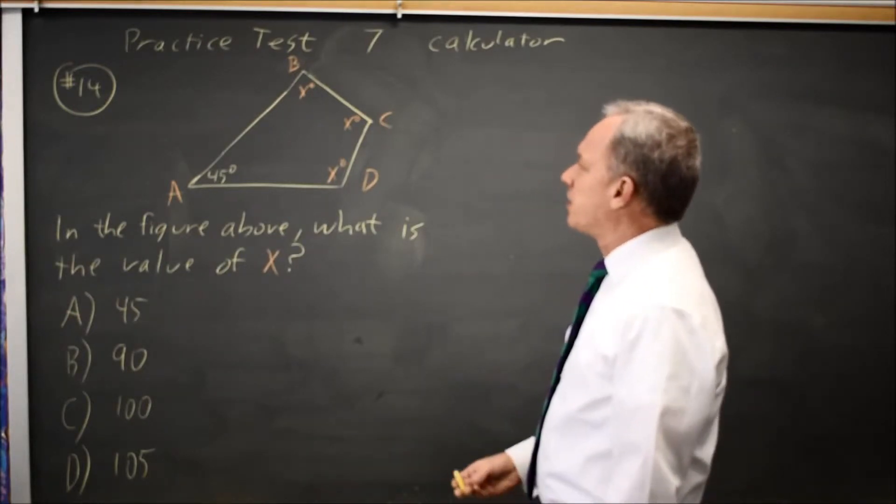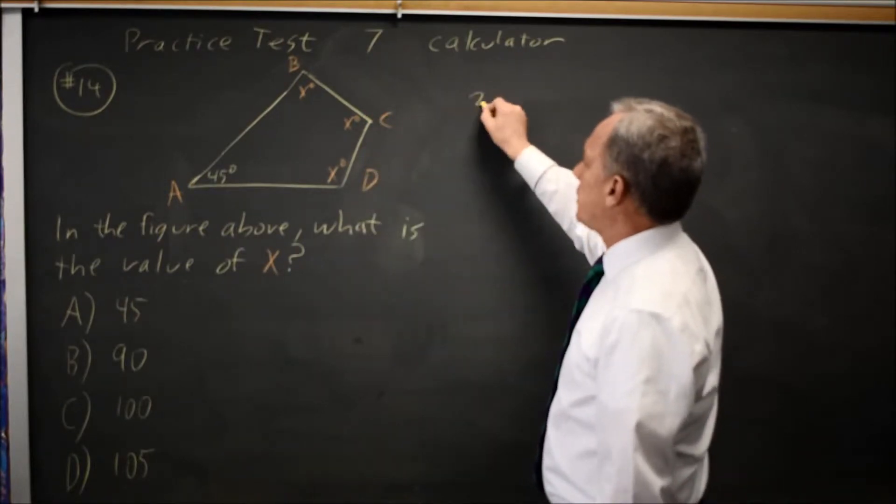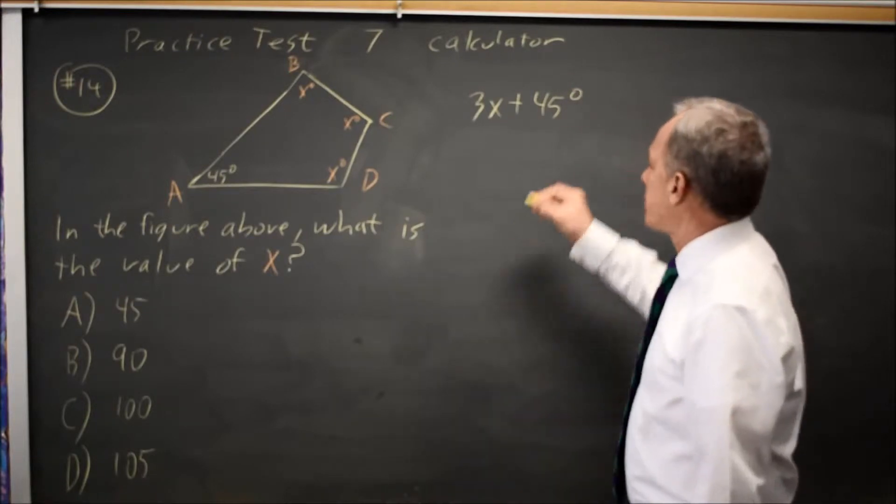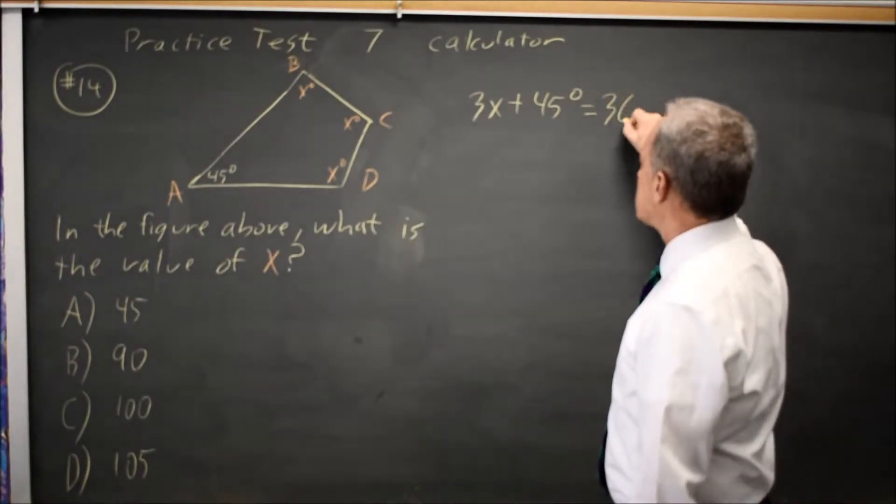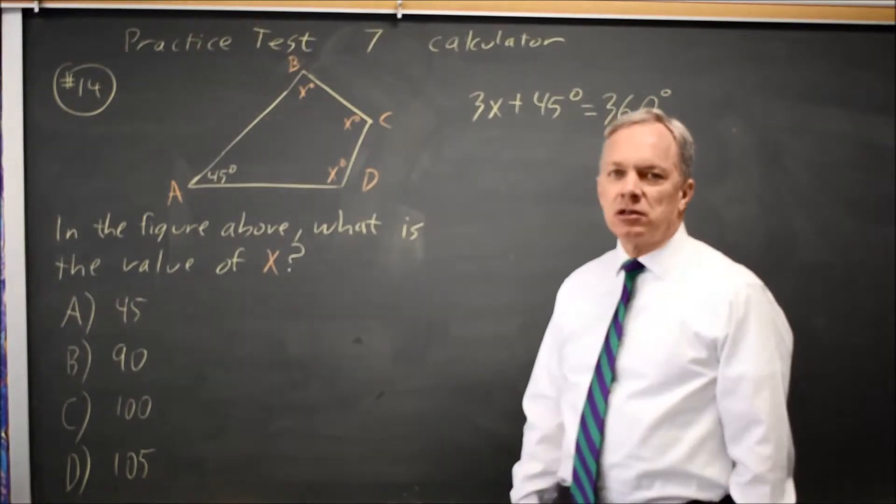If you recall the angles of a quadrilateral x plus x plus x, so 3x plus the fourth angle, 45, the angles of a quadrilateral always add up to 360 degrees as they do in a rectangle.